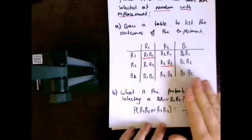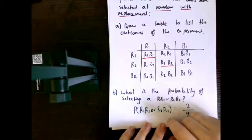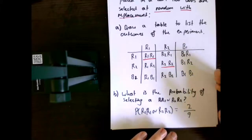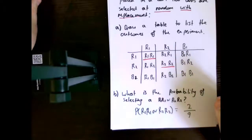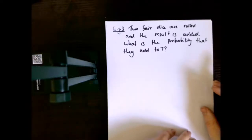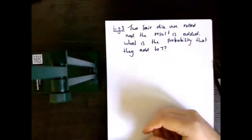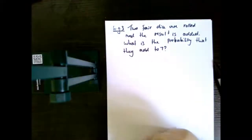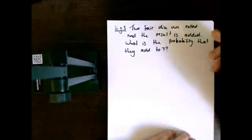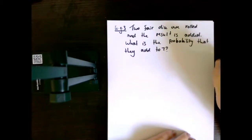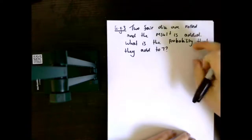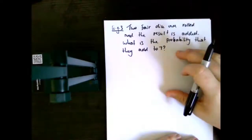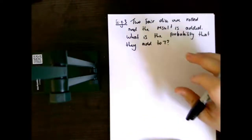This is not a two-way table — this is just a normal table. So what we're going to do now is have a look at the advantage of using a table over a tree diagram in a specific example. Two fair dice are rolled and the result is added. So I roll a dice and I might get a one and a five — I add them together and I get six. Or I might get a six and a four and get ten. We're assuming that the dice are six-sided. What it's asking is: what is the probability that they add to seven?